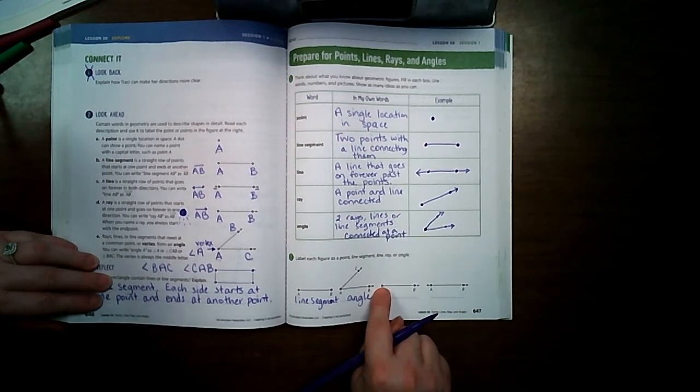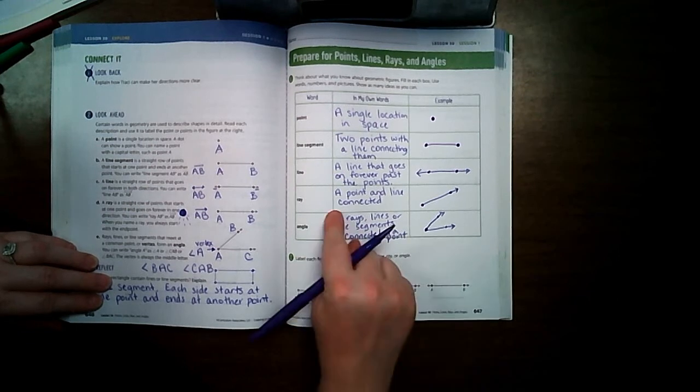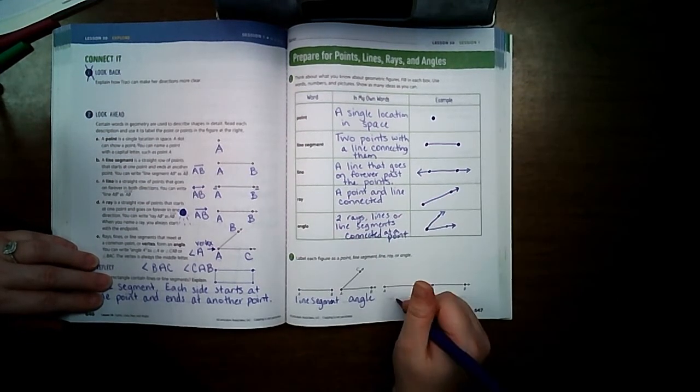This one has a point on one end and an arrow on the other end. If we find a point on one end and an arrow on the other end, it's a ray.